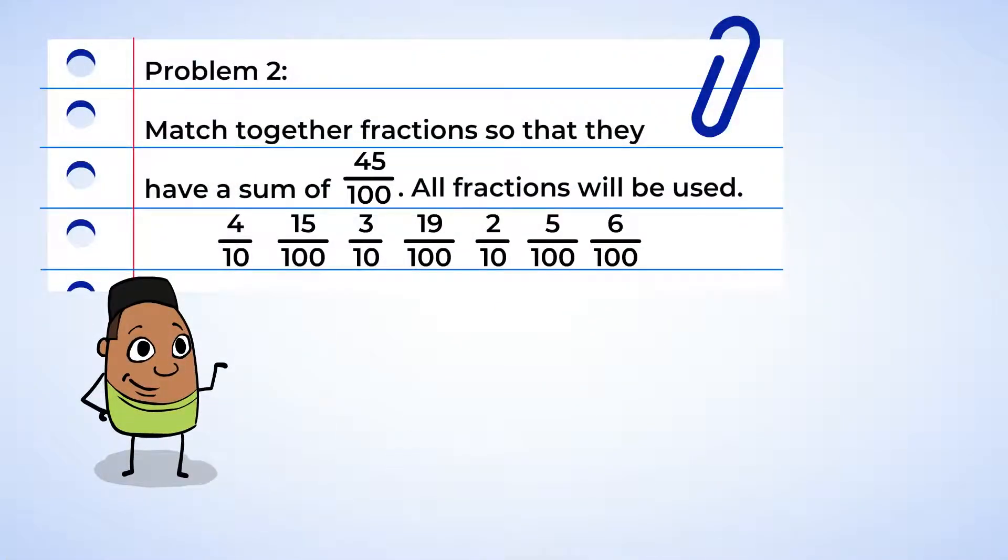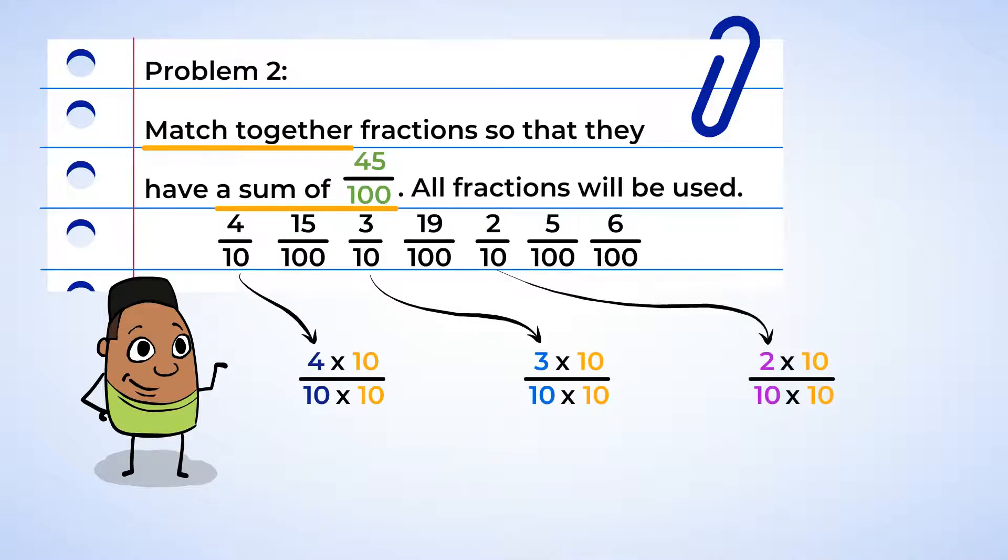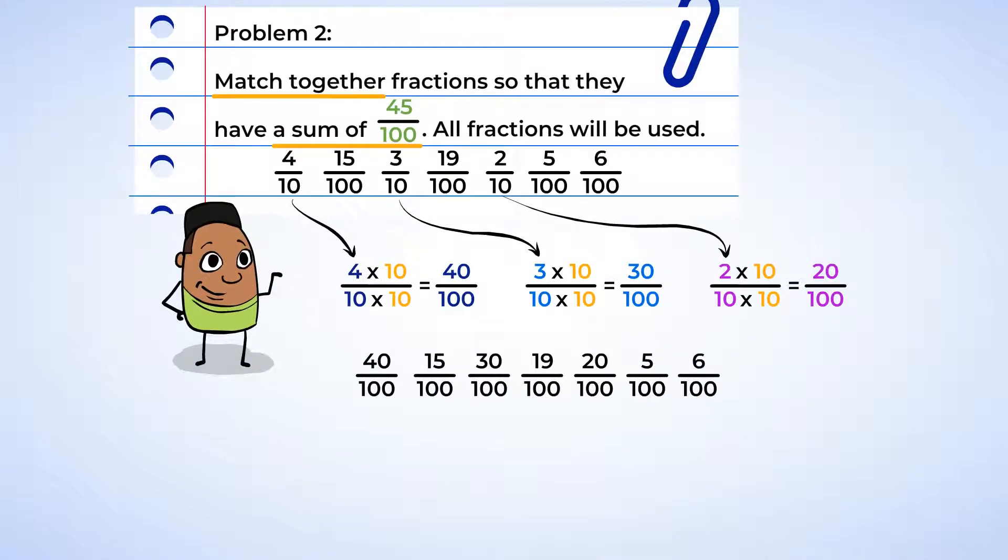Wow! Fun! This one's like a puzzle. We need to match together fractions so that they have a sum of 45 hundredths. First, we will need to convert all of the tenths in the denominators to become hundredths. 4 times 10 is 40, so 4 tenths becomes 40 hundredths. 3 times 10 is 30, which makes 3 tenths turn into 30 hundredths. And finally, 2 times 10 is 20, changing 2 tenths into 20 hundredths. That's better!